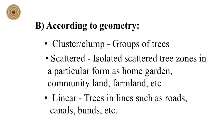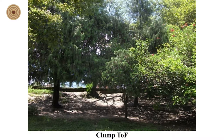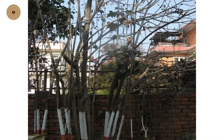These are some pictures of different categories of trees outside forest. This one is a clump. This one is the linear type. Here also linear, and this one is scattered.